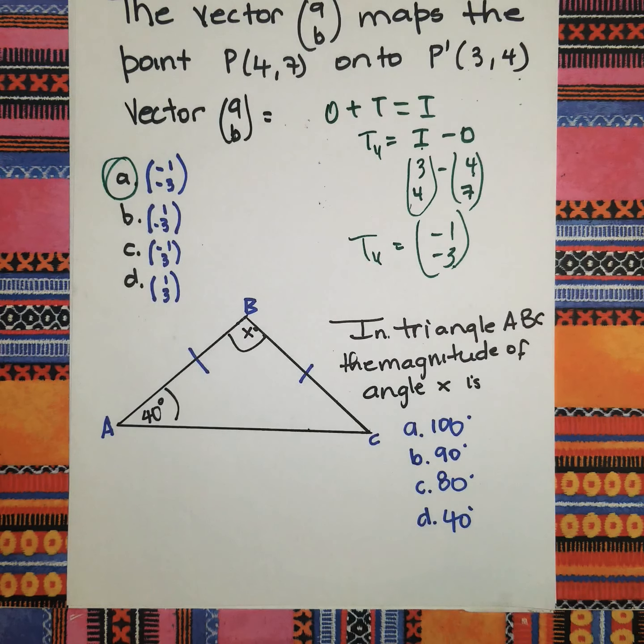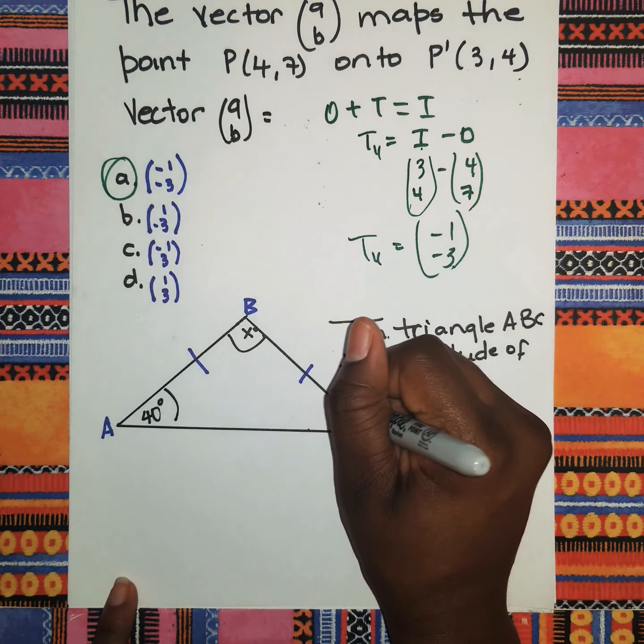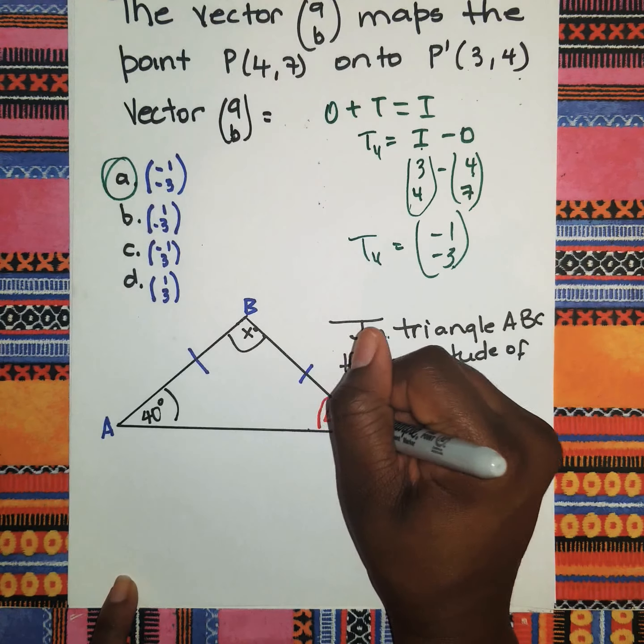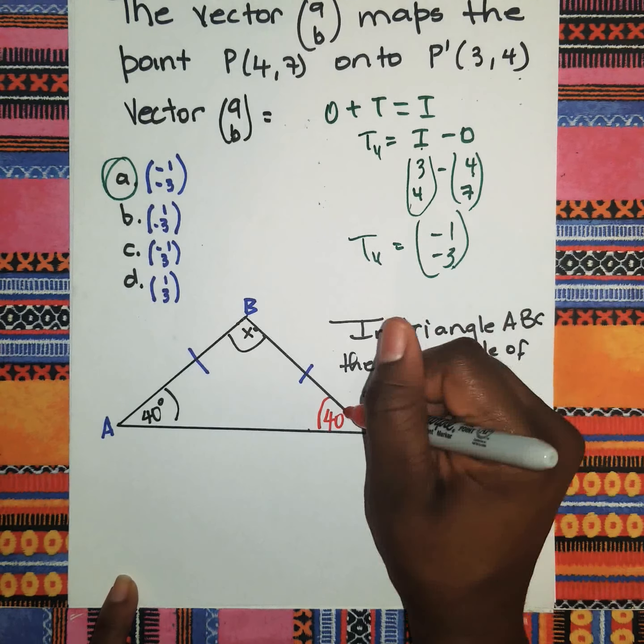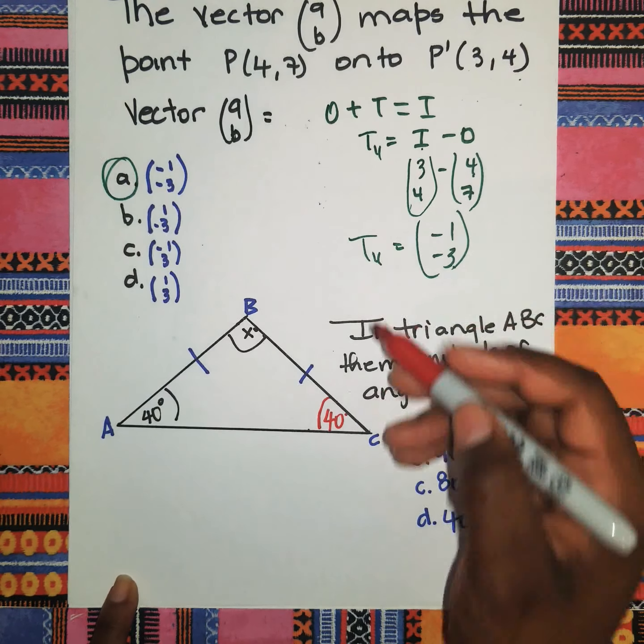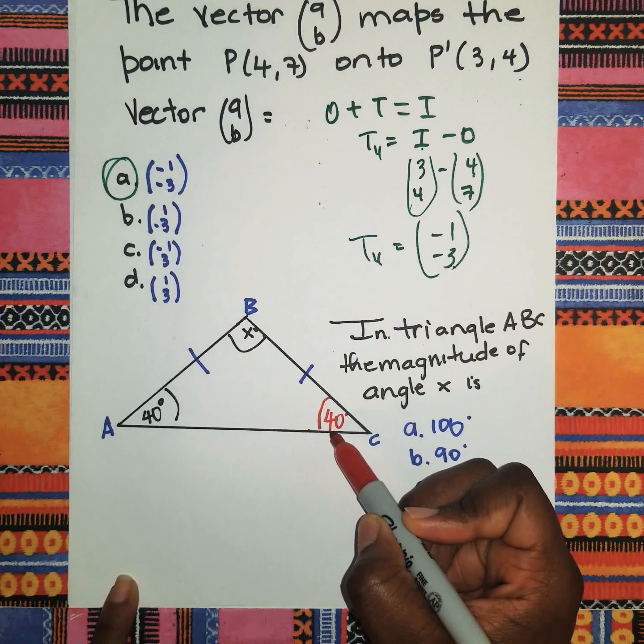The next question comes from angles where they say in triangle ABC the magnitude of x is... we see it's an isosceles triangle where base angles are equal. They gave us one angle to be 40 degrees, so we know the angle on the opposite side or the other base will also be 40 degrees.